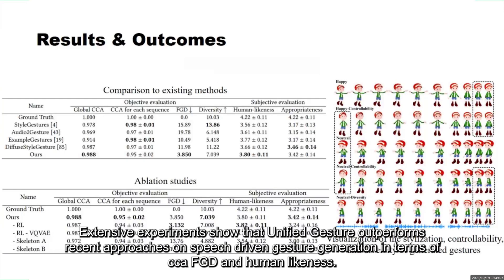Extensive experiments show that UnifiedGesture outperforms recent approaches on speech-driven gesture generation in terms of CCA, FGD, and human likeness.